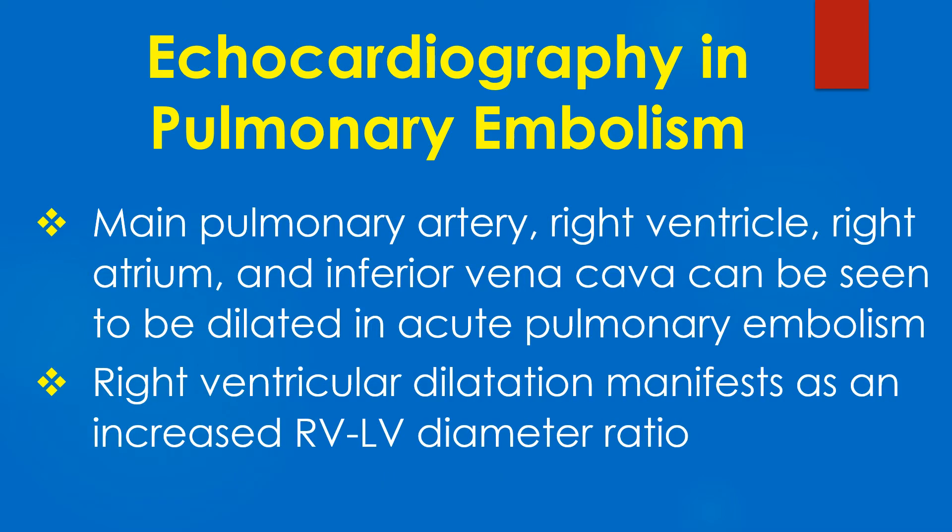The main pulmonary artery, right ventricle, right atrium, and inferior vena cava can be seen to be dilated in acute pulmonary embolism. Right ventricular dilatation manifests as an increased RV to LV diameter ratio.